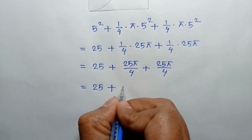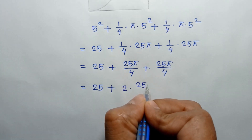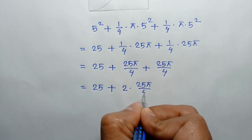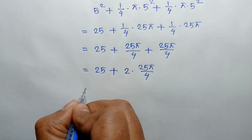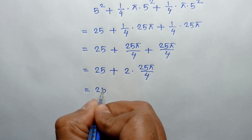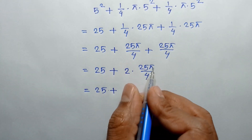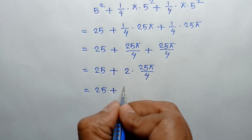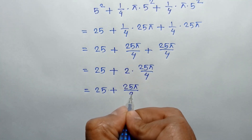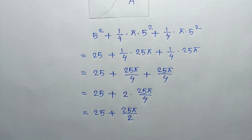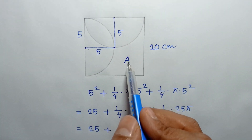So this equals 25 plus 25π over 2, which simplifies to 25 plus 25π over 2.